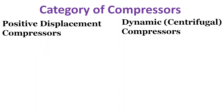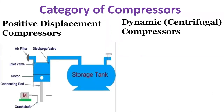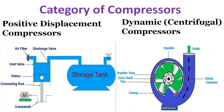Compressors can broadly be classified as positive displacement compressors and dynamic compressors like centrifugal compressors. In positive displacement compressors, we have a piston-cylinder system where air is compressed and discharged into a storage tank. Centrifugal compressors are axially driven — air enters at the eye axially, gets compressed, and is driven to the outlet.